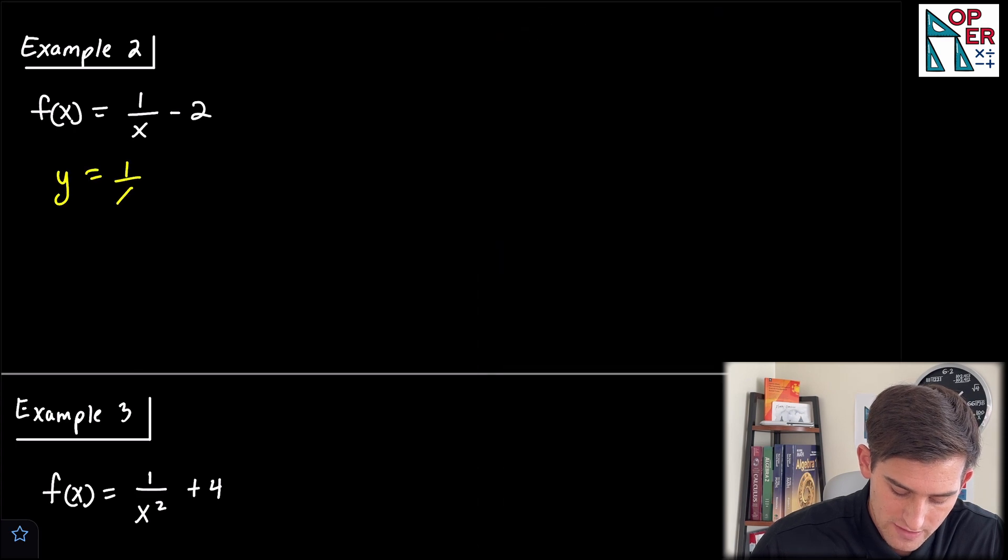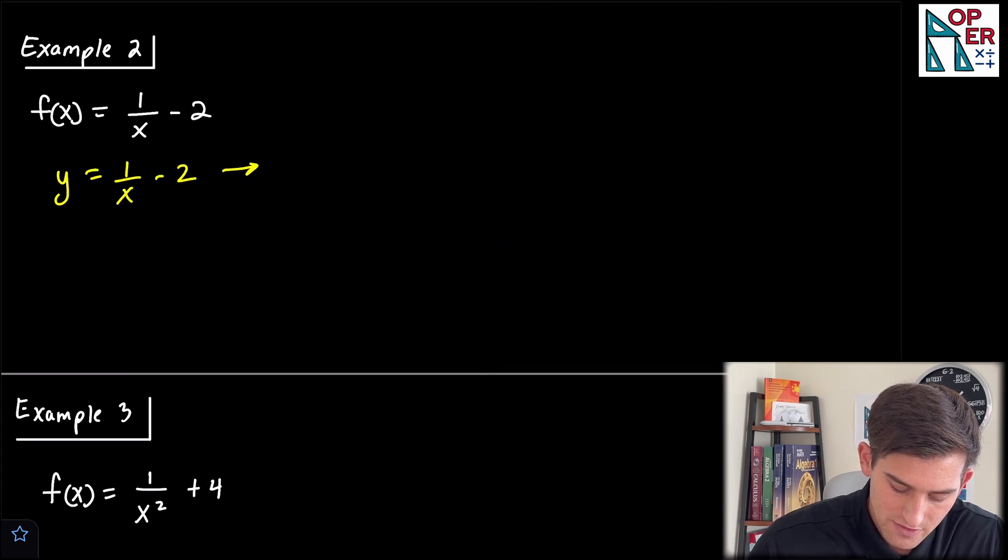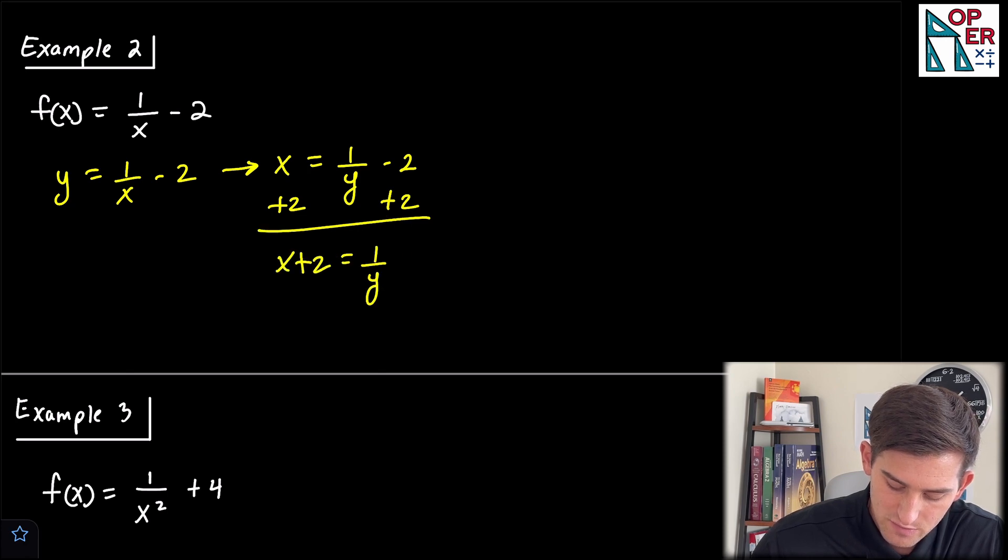Let's do it the same way. y is equal to 1 over x minus 2, and now let's switch x is equal to 1 over y minus 2. So now let's add 2 to both sides. That's going to give us x plus 2 is equal to 1 over y.